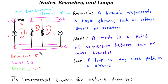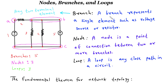Nodes, branches, and loops are interconnected in a circuit. Nodes provide the connection points for branches, and branches form the paths through which current flows. Loops, on the other hand, help us analyze the behavior of a circuit, such as determining voltages and currents through different components. By understanding the relationship between these elements, we can gain a deeper understanding of circuit analysis and design.